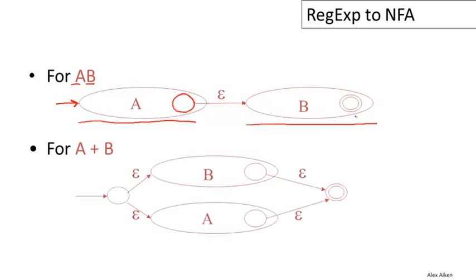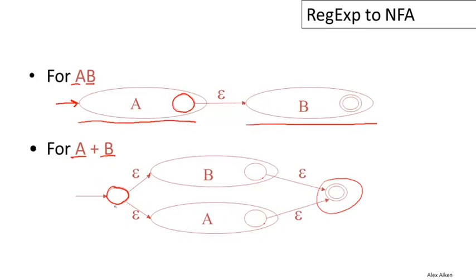For union, we have a similar approach. We add a new start state for the compound machine. A plus B means the input is either in the language of A or in the language of B. We use epsilon transitions to make a non-deterministic choice right from the start state — either we process the string using the automaton for A or for B. When we reach the final state of either machine, we make an epsilon transition to a new final state. If the string is in the union of A or B, then choosing A or choosing B will work, so the machine accepts the string.